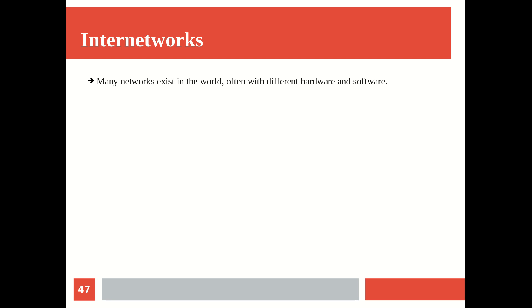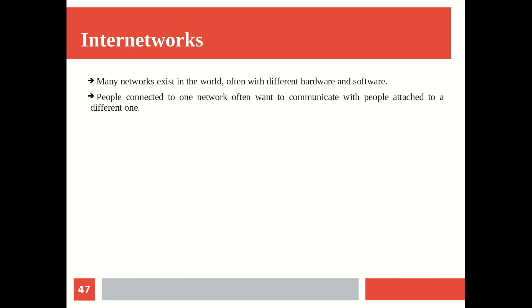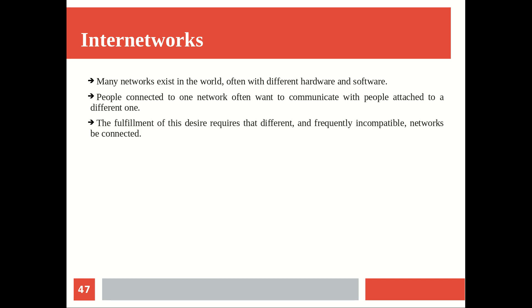As already mentioned, the wide area network generalizes to the so-called internet, which covers the entire planet. When it comes to inter-network, the term means 'between networks' - so different networks want to communicate with each other. Many networks exist in the world, often with different hardware and software - meaning different protocols. People connected to one particular network often want to communicate with people on an entirely different one, so different and frequently incompatible networks need to be connected and communication should be possible among them. A collection of interconnected networks is what we call an internetwork, or simply internet.